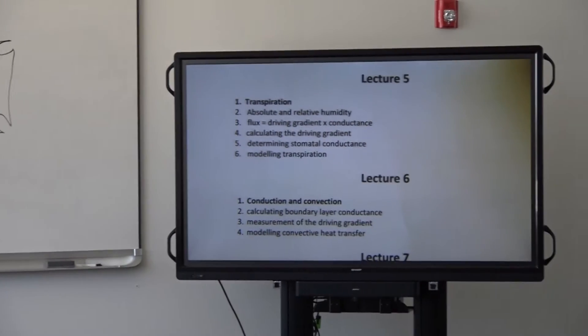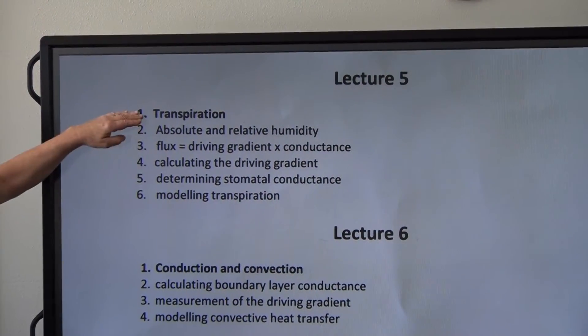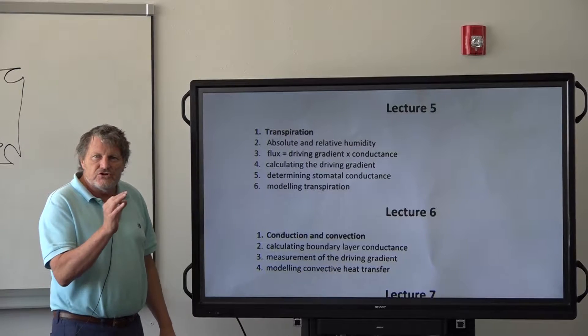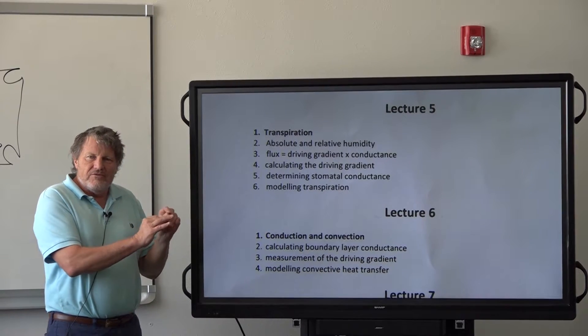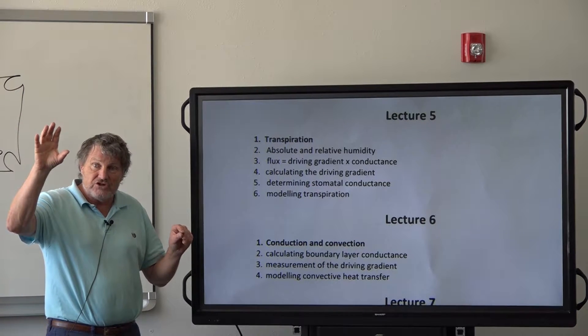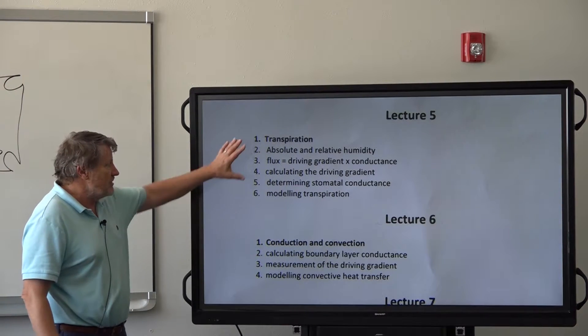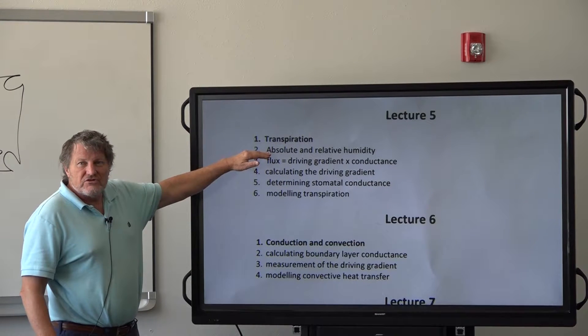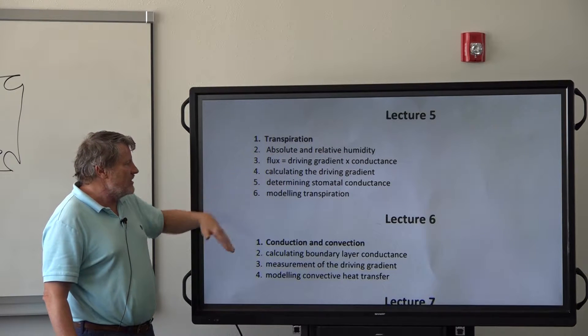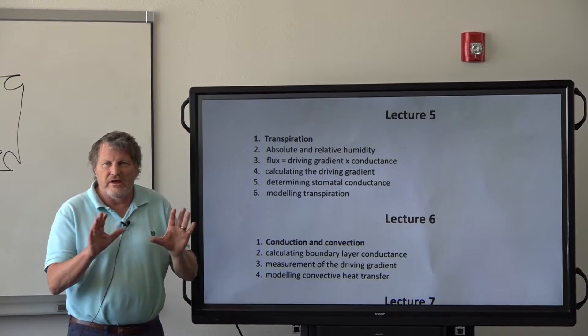Lecture five. We focus on transpiration. Now we have net radiation in here. The whole lecture is all on how we calculate transpiration, which is the flux of water. And transpiration is determined by the driving gradient for evaporation divided by the resistance to flow of these water molecules out into the atmosphere. We discuss absolute and relative humidity. That's critical to understanding those two. The flux. Calculating the driving gradient. Determining stomatal conductance. And finally modeling it. That's all in lecture five.